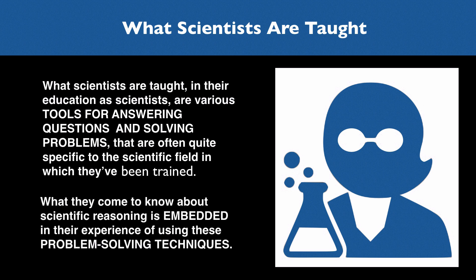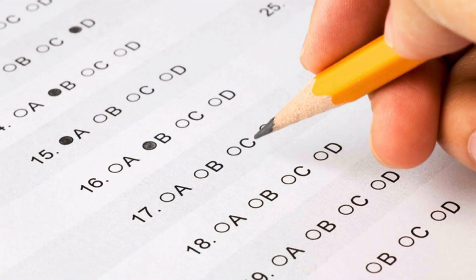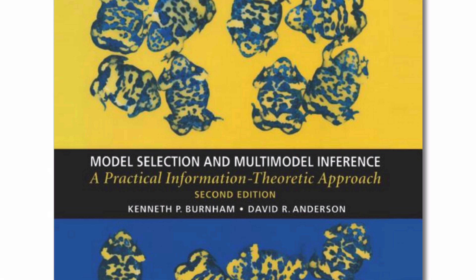What they come to know about scientific reasoning is embedded in their experience of using these problem-solving techniques. So in physics and engineering, for example, they'll learn a lot about error analysis, different methods for fitting curves to data points, linear regression, and so on. Social scientists will learn a lot about how to write surveys and analyze survey data that physical scientists never have to learn. Now everyone learns something about hypothesis testing in statistics classes, but the parts that are relevant to testing hypotheses in physics can be quite different from the parts relevant to testing hypotheses in psychology. In some fields, you learn a lot about how to use data to select between competing theoretical models; in other fields, these methods never come up.